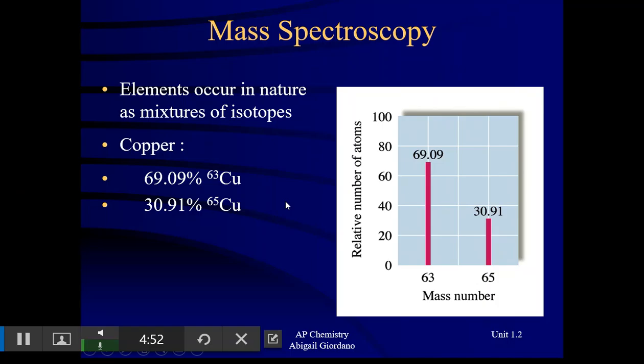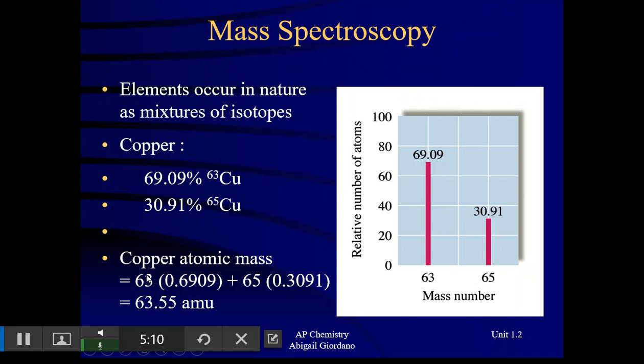So what do they use this data for? Well, this data is used to calculate the atomic mass on the periodic table. How do they do that? They do calculations that look like this. Now let's break this down. So what have they done here? They took the mass number for that particular isotope, and they multiplied it times the percent abundance. Of course, they took the percentage and put it back into decimal form. Did the same thing for the other isotope, and then added these numbers together.